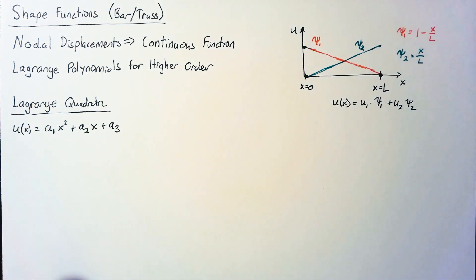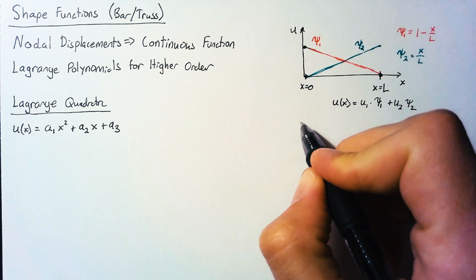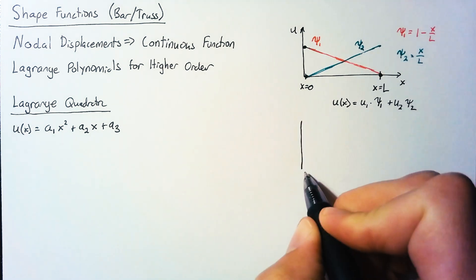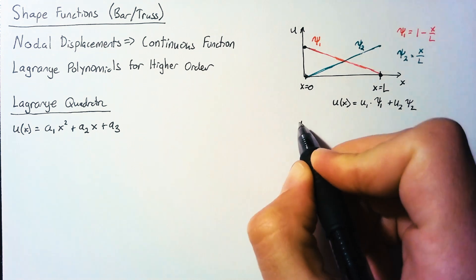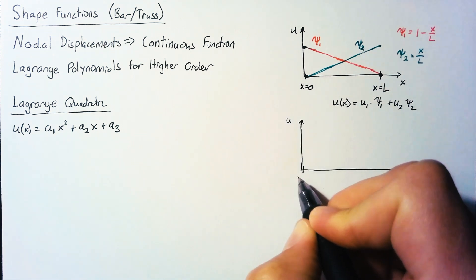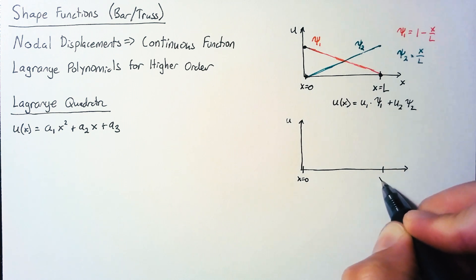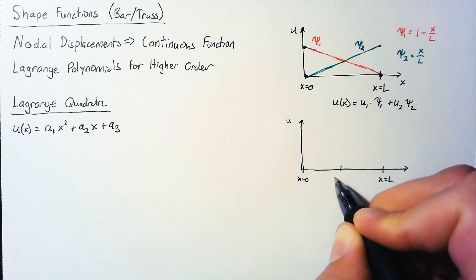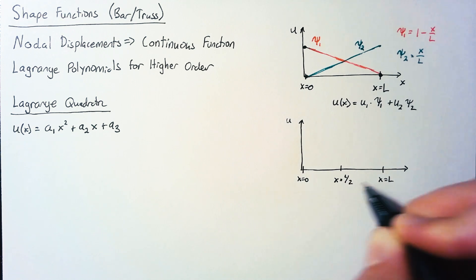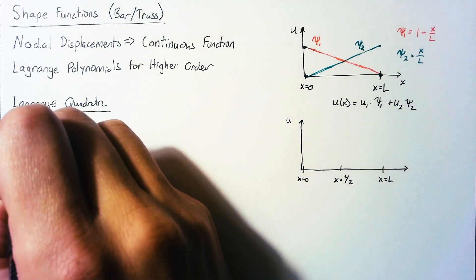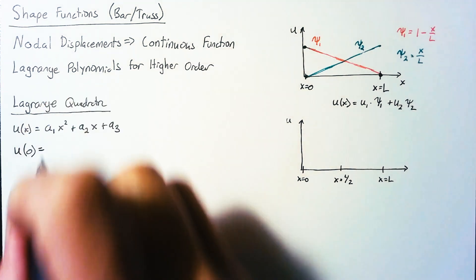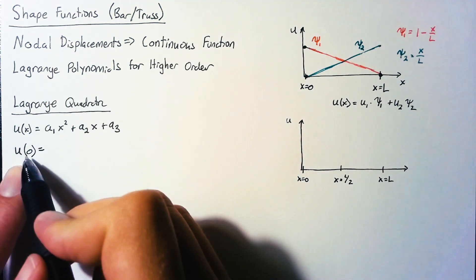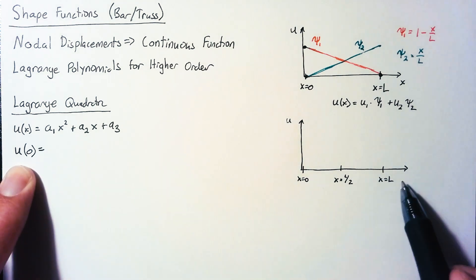Now we have three unknowns here. Looking at our linear element with just two unknowns, we only needed to specify the location at two nodes. With three unknowns, we need to specify the location at one additional node. So we still have x equals 0, we still have x equals l, but then we add one more node in the middle where x equals l over 2. Our procedure here is now pretty simple. We're just going to define what the displacement is based off of this function at these three points.